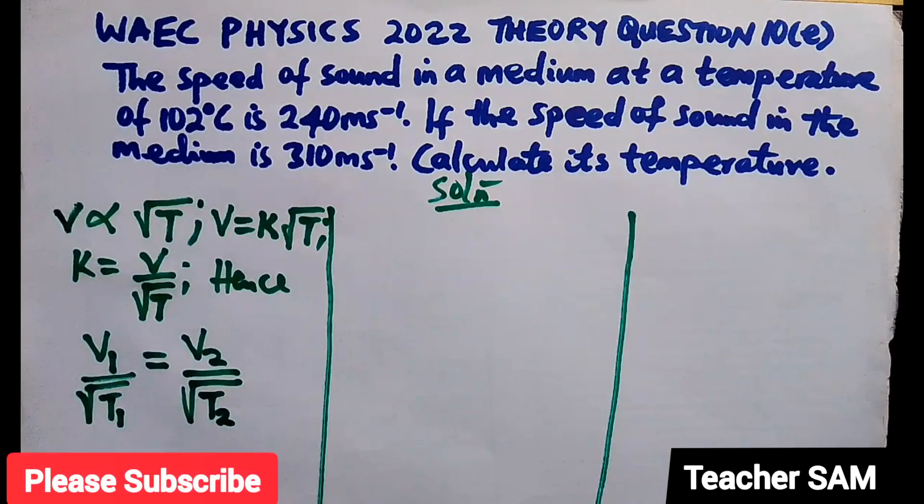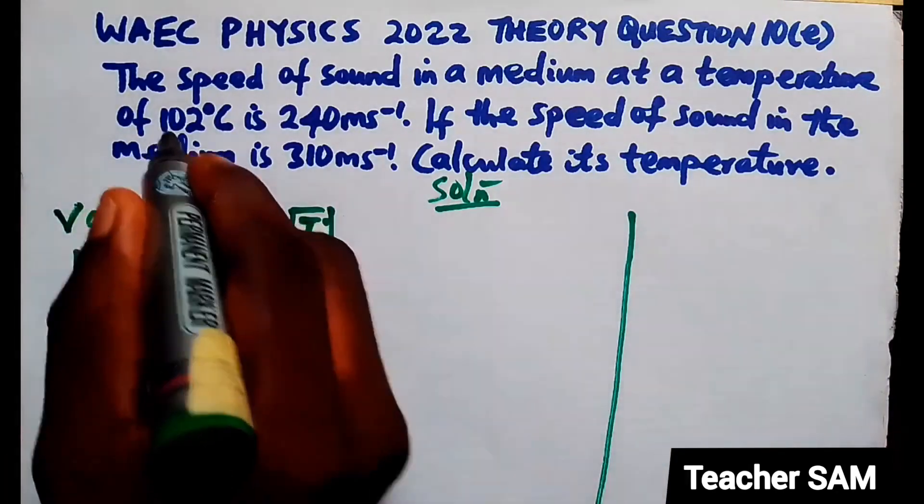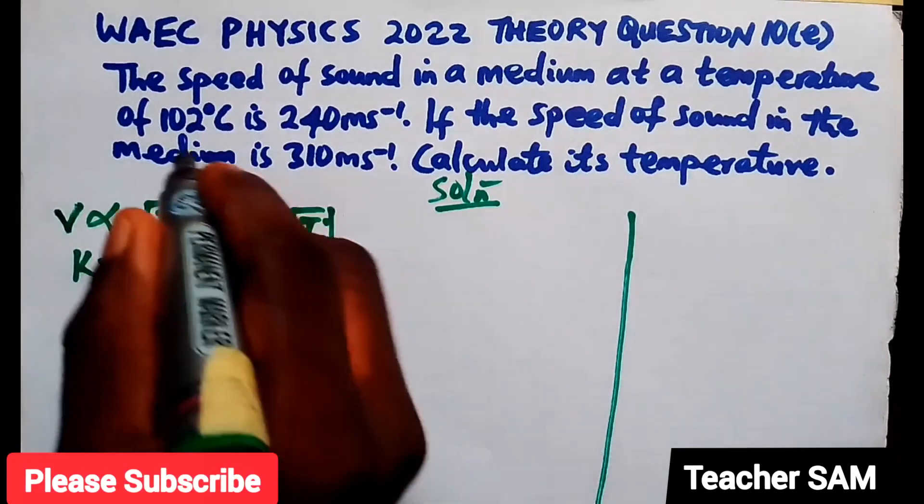Now, all we need now just to substitute those values that were given to us. We know that in the first case, we have temperature here. We have temperature that was given to us here.